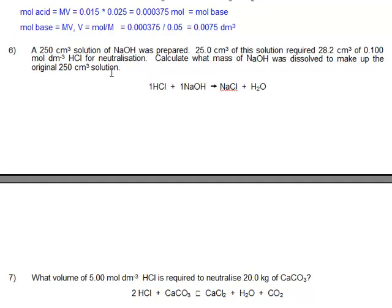So let's work out the hydrochloric acid first of all then. 28.2 centimetre cubed, so the moles. Mol equals 0.0282 multiplied by the molarity, 0.1. Well, we can see the move to the decimal place, 0.00282 moles of acid.